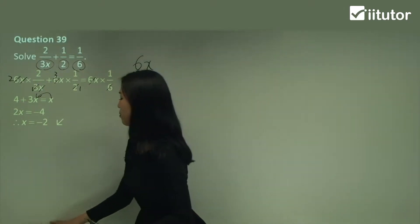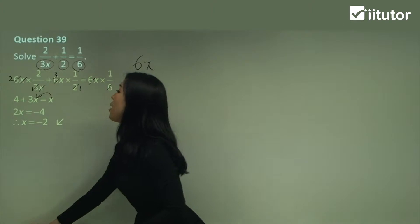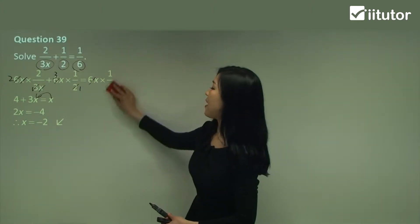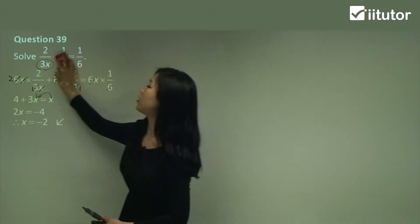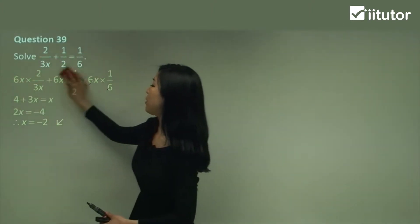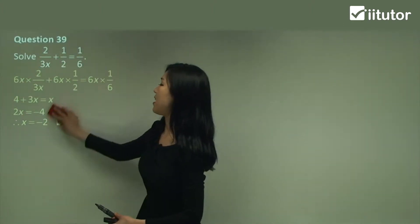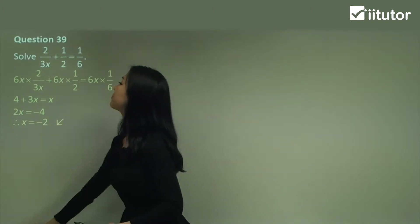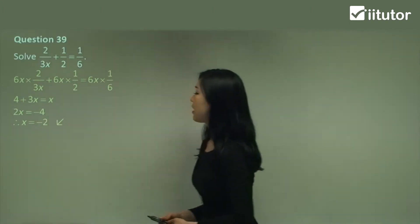So the last steps are pretty easy. Just remember: after you've found your lowest common multiple, multiply by the extra pronumeral that you have. So that's question 39.